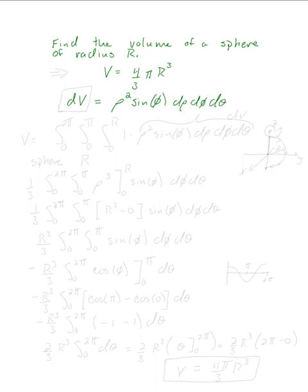Now if you're wondering where that comes from, I'm not going to derive it here. If you're interested, you can take a look at another one of the pen casts to see where that comes from. But we need to have this dV element whenever we integrate in spherical coordinates.